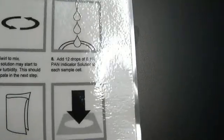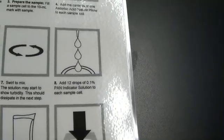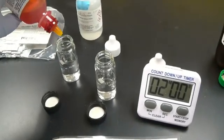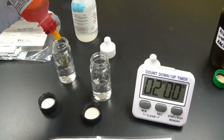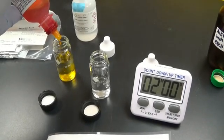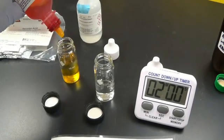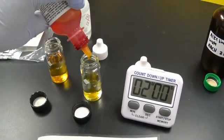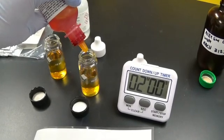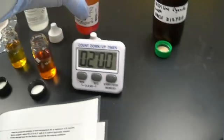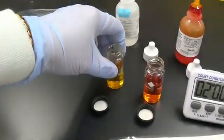Now I add 12 drops of the 0.1 pan indicator solution to each well and swirl.